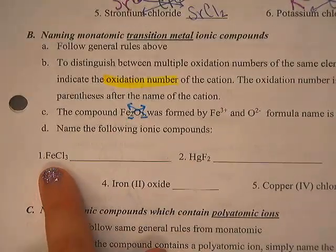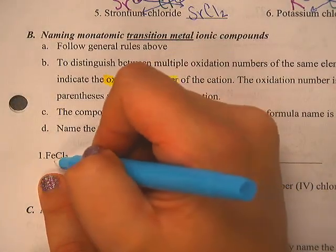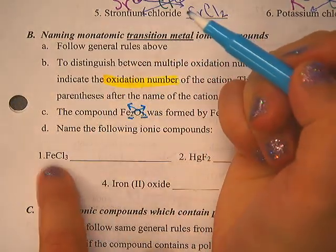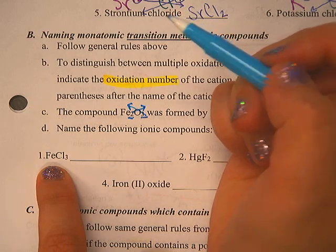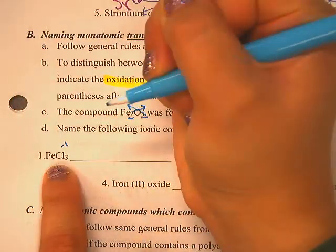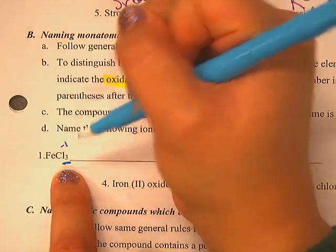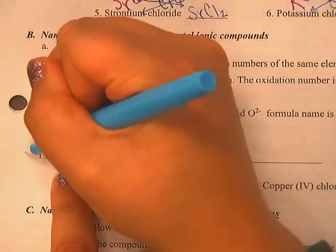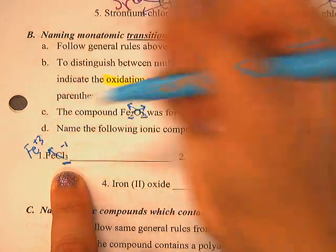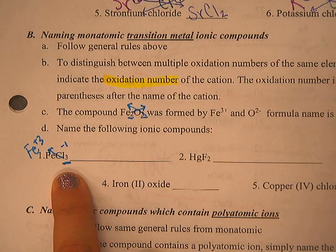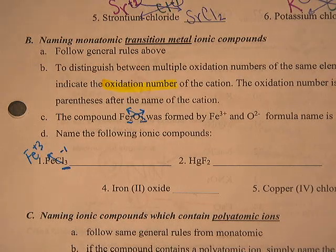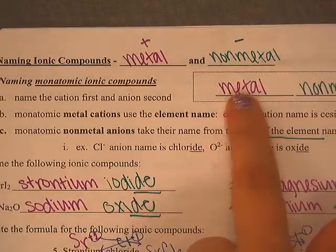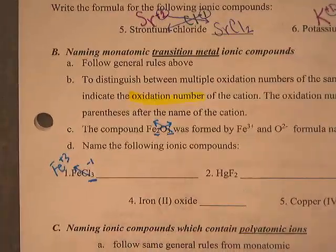Let's look at this next example — FeCl₃. There is no subscript after Cl, and since there's no subscript, it's implied to be 1. That makes sense because chlorine on the periodic table has a minus 1 charge, which means the 3 sitting on chlorine must have come from iron, meaning iron started as Fe with a plus 3 charge. When we write the name, we still use the entire metal name: iron.